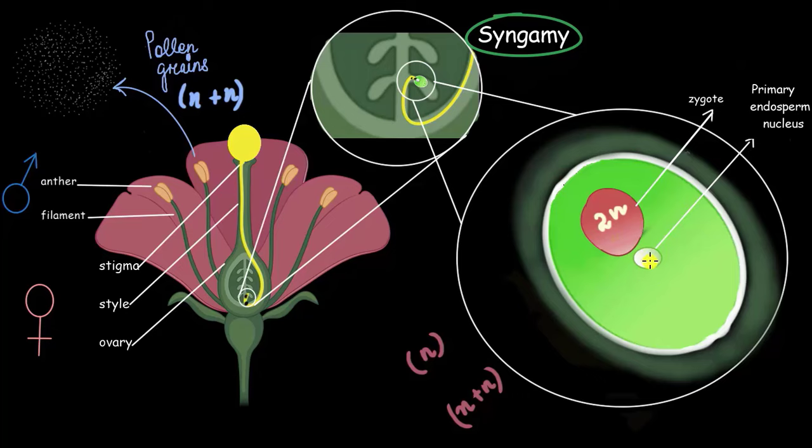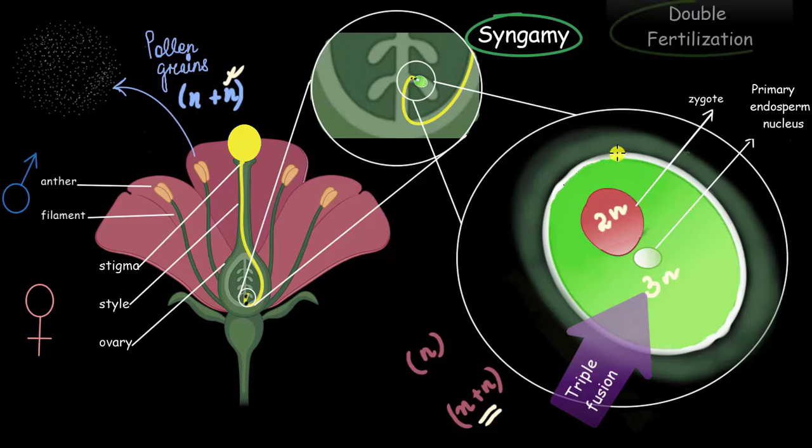Now, can you tell me what will be the ploidy of this primary endosperm nucleus? It had two haploid female nuclei and one male gamete nuclei, right? So, the ploidy will be 3N or triploid. And also, since three different nuclei fuse together to give rise to this triploid structure, we call it triple fusion, the fusion of three nuclei. And also, since the male gamete fused twice, once to form the zygote and next to form the primary endosperm nucleus, this entire process is called double fertilization, which is typical for an angiospermic plant.